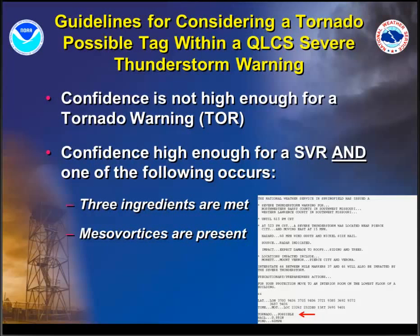This is the tornado possible tag within a severe thunderstorm warning for IBW participating offices. We're not quite confident enough to issue a tornado warning, but confidence is high enough for a severe, and one of the following occurs: three ingredients are met, or mesovortices are present. Yes, this is pretty much the same guidance as a severe thunderstorm warning — but remember, going back to earlier slides, mesovortices are a bottom-up type process. These things tend to develop on average about a kilometer or so above the ground, some as low as a half kilometer, some up to one and a half to two kilometers. Given that they're a bottom-up process and very close to the ground, with most mesovortices, a tornado is technically possible. If you want to use a ramp-up effect, you could hold off on the tornado possible tag until you actually see a mesovortex — but keep in mind, once you get beyond 40 nautical miles from the radar, you're not going to see the genesis region of most mesovortices.